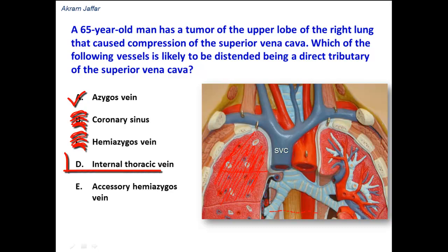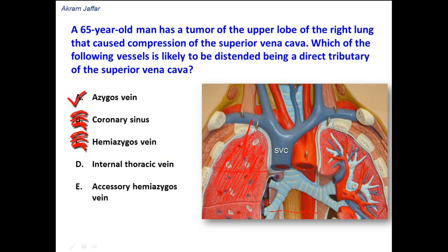The internal thoracic vein might also be affected being a tributary of the subclavian vein. The internal thoracic vein is a tributary of the subclavian vein, but the subclavian vein will form the brachiocephalic vein, and then the brachiocephalic vein will form the superior vena cava. In other words, the internal thoracic vein is not a direct tributary of the superior vena cava.